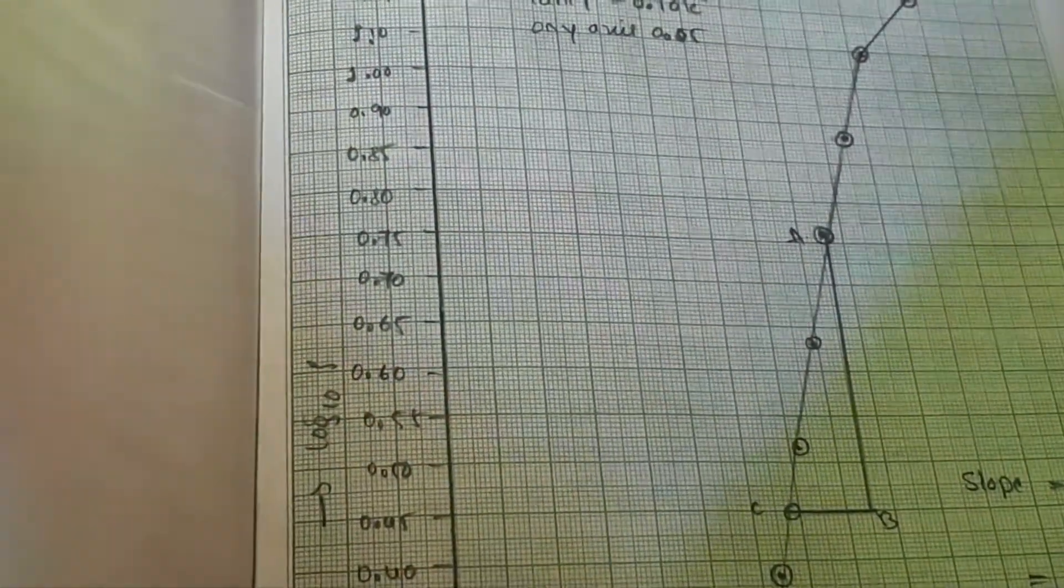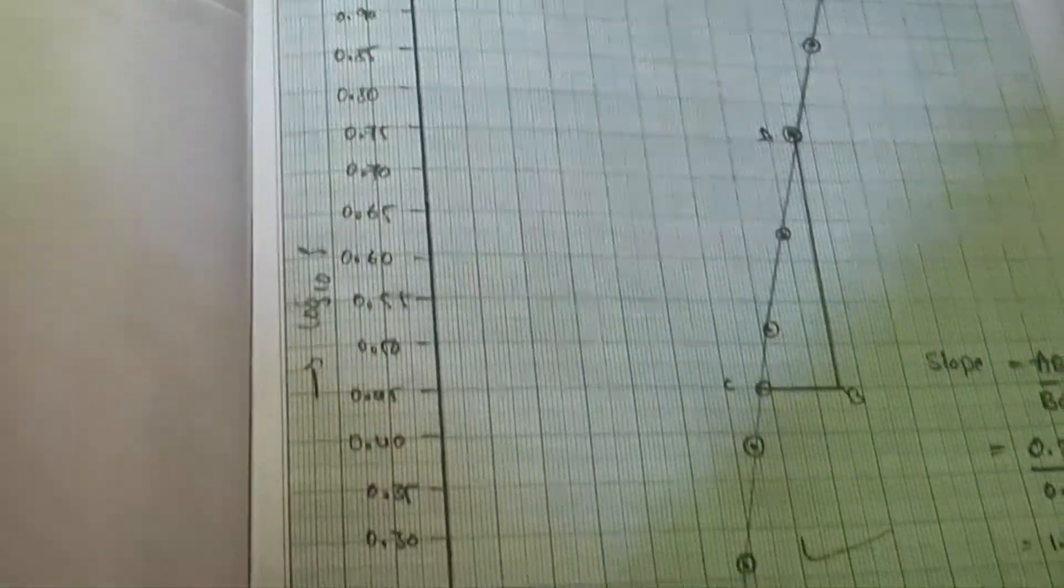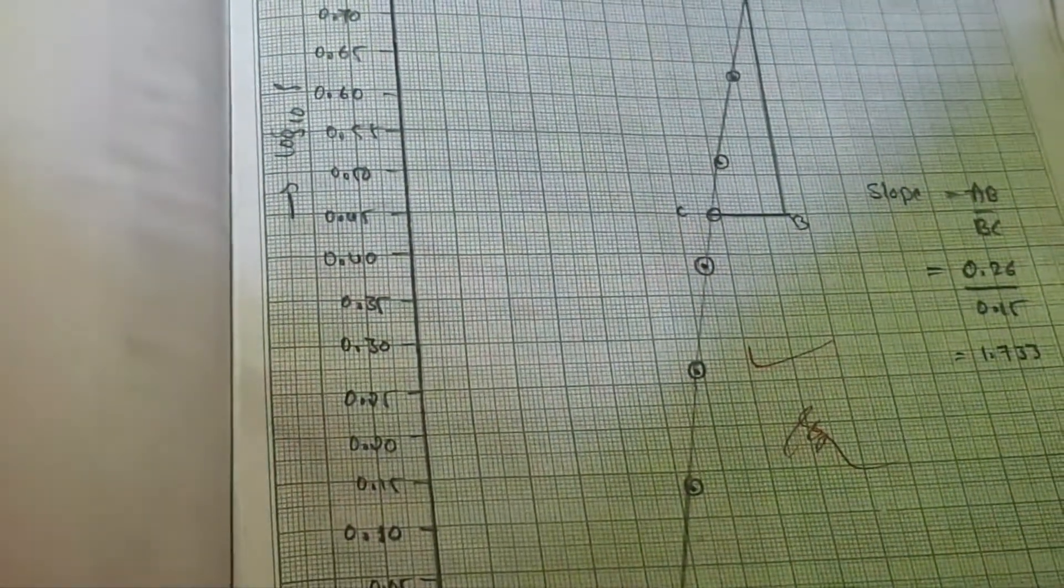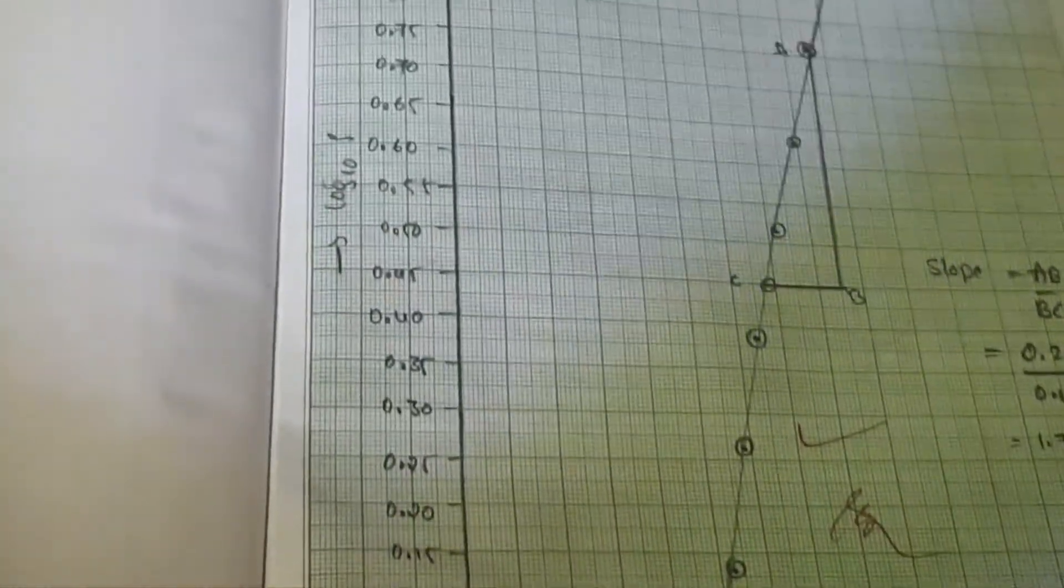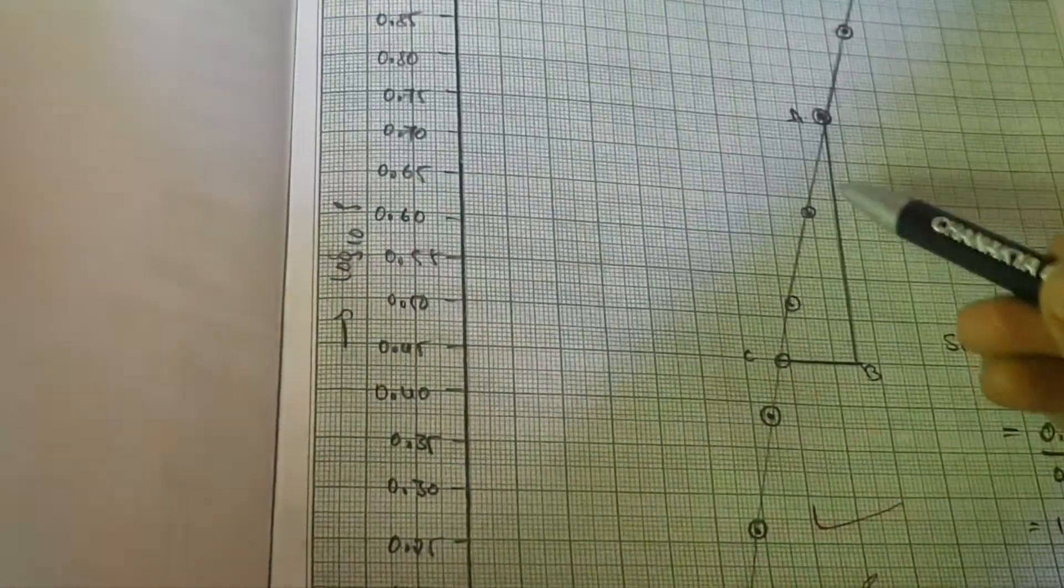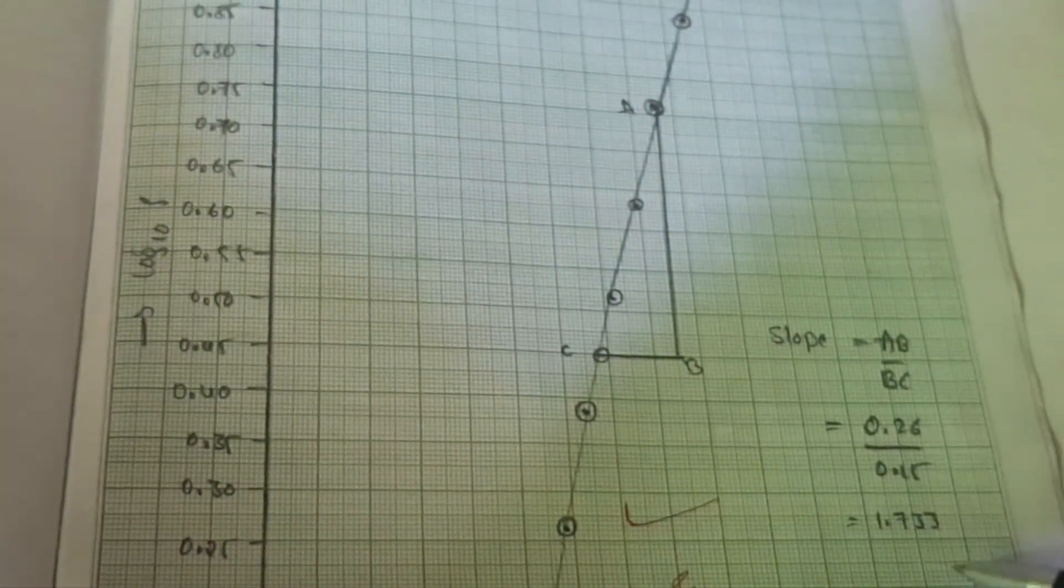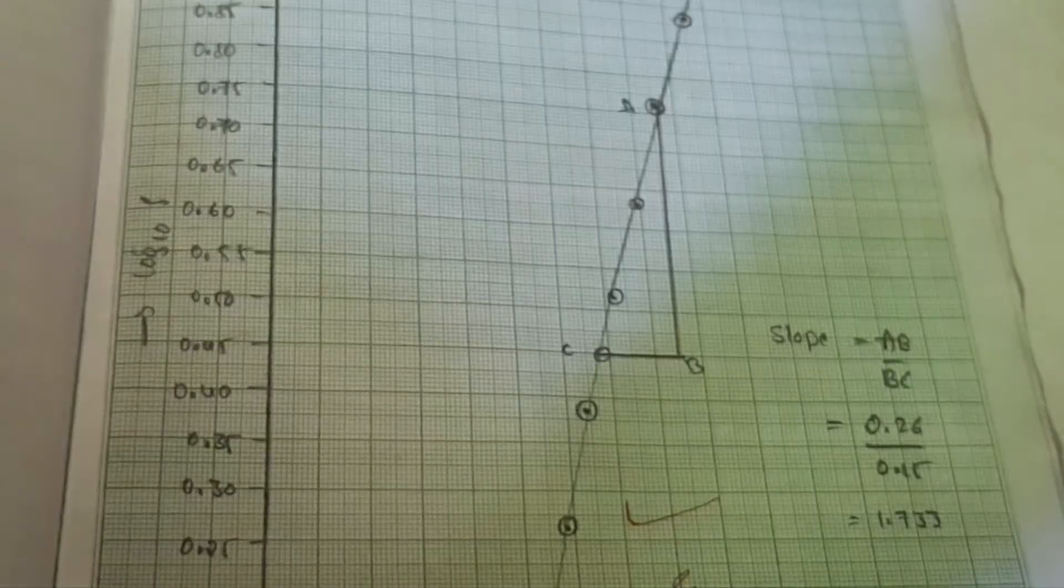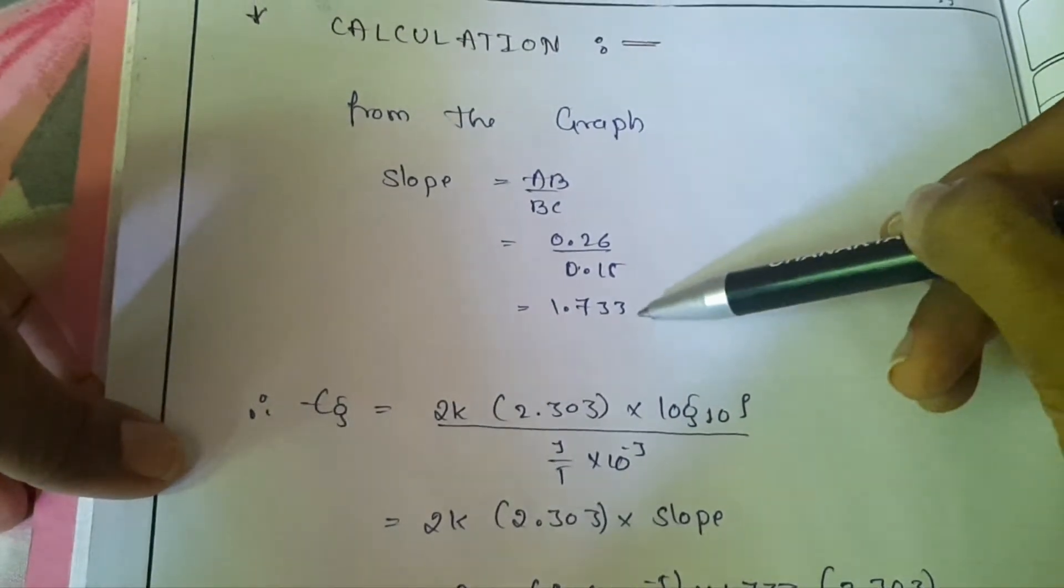You have to plot the graph of log rho versus temperature, 10³ by T. Once we plot we will get the straight line. We have to take the slope, that is given by AB by BC, that is equal to 1.7. From graph we get the slope.